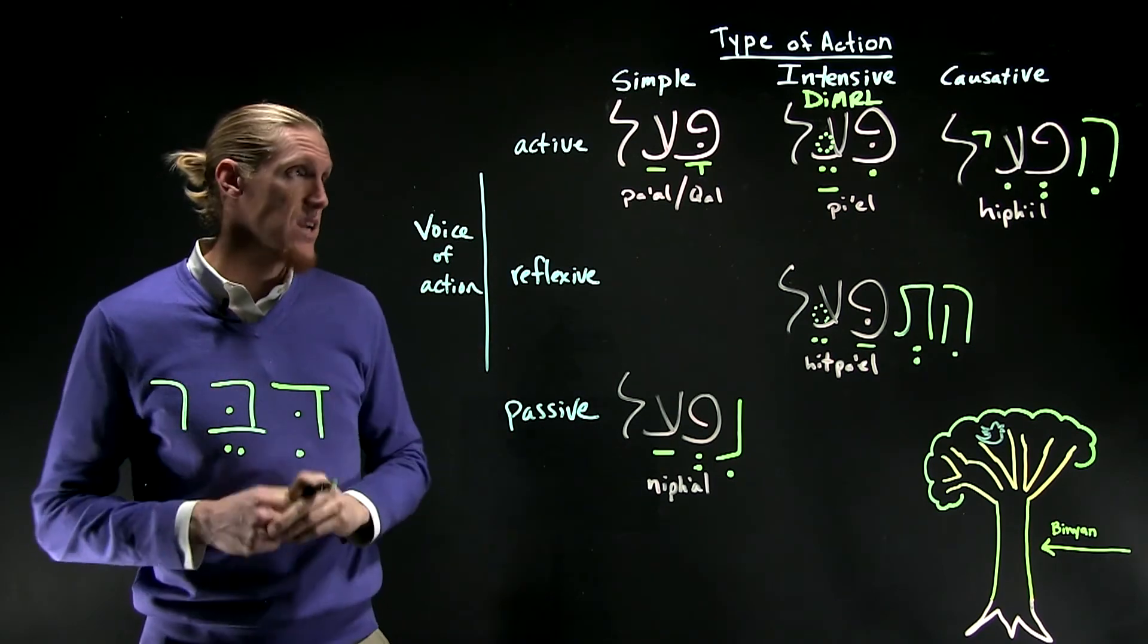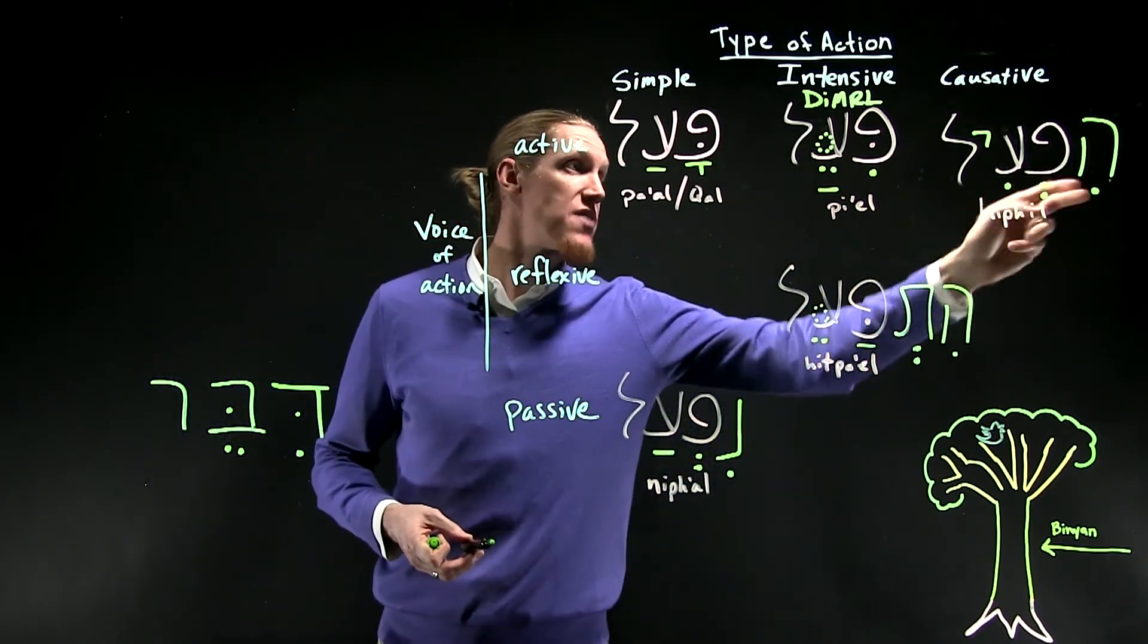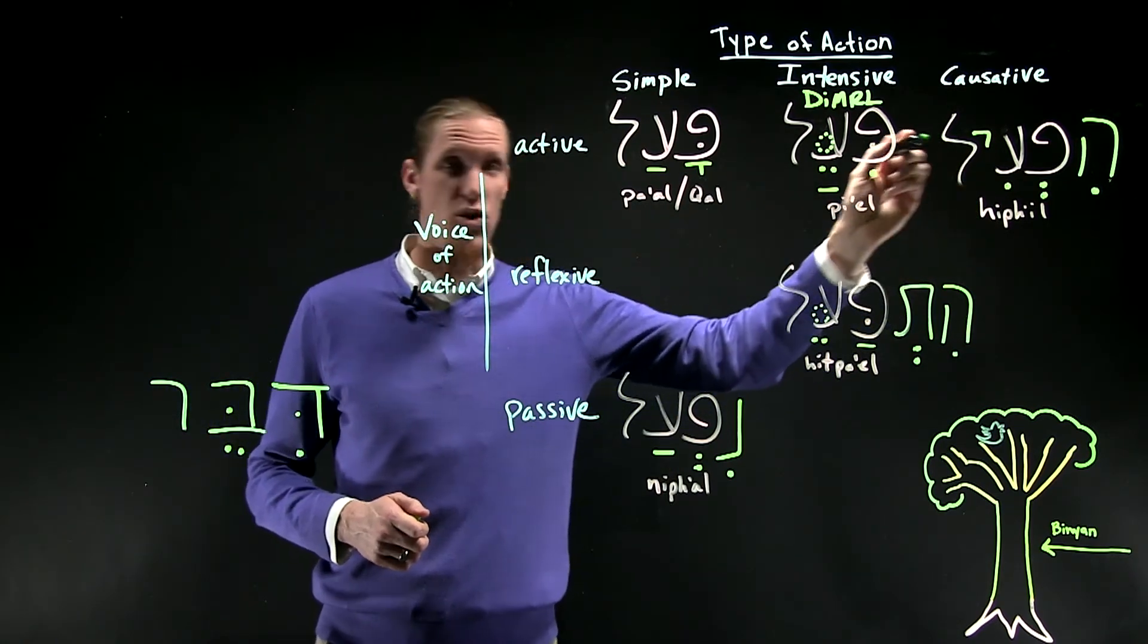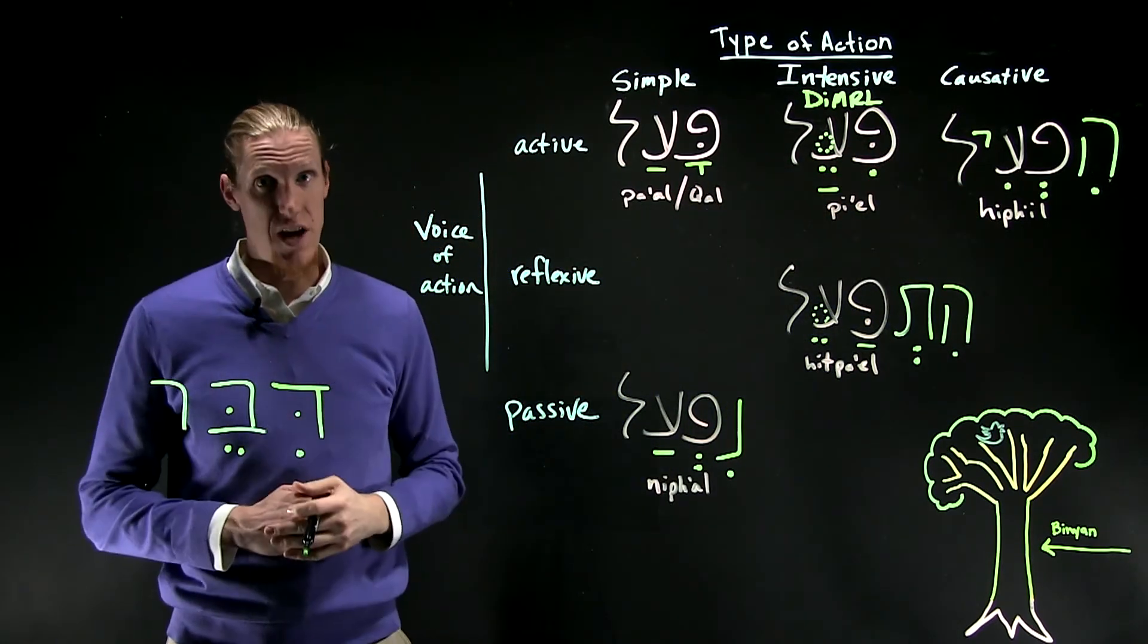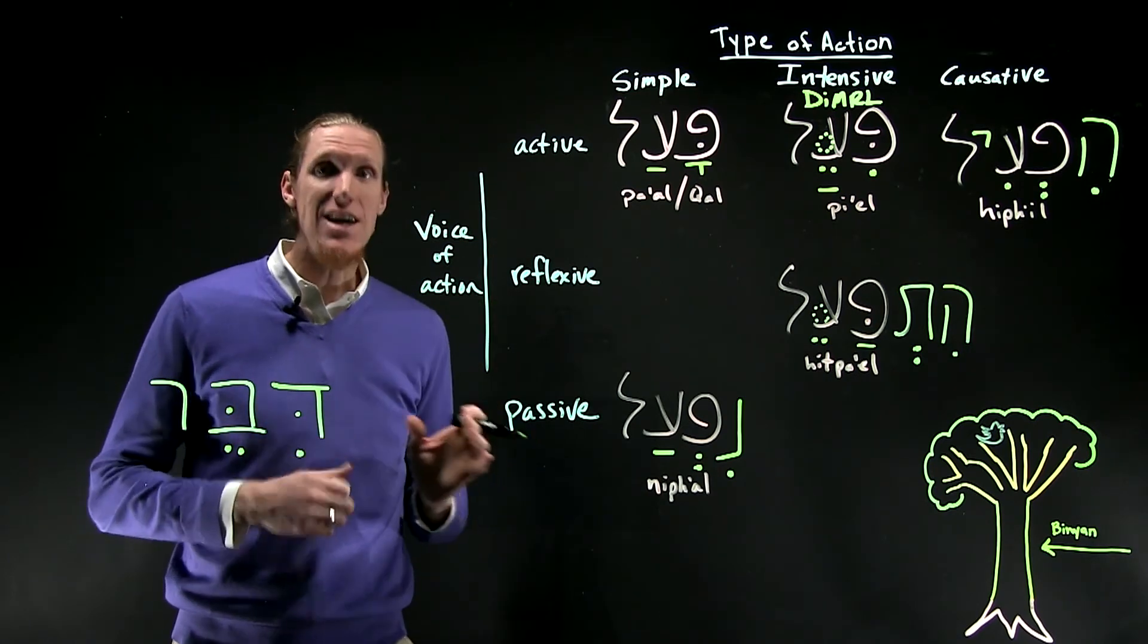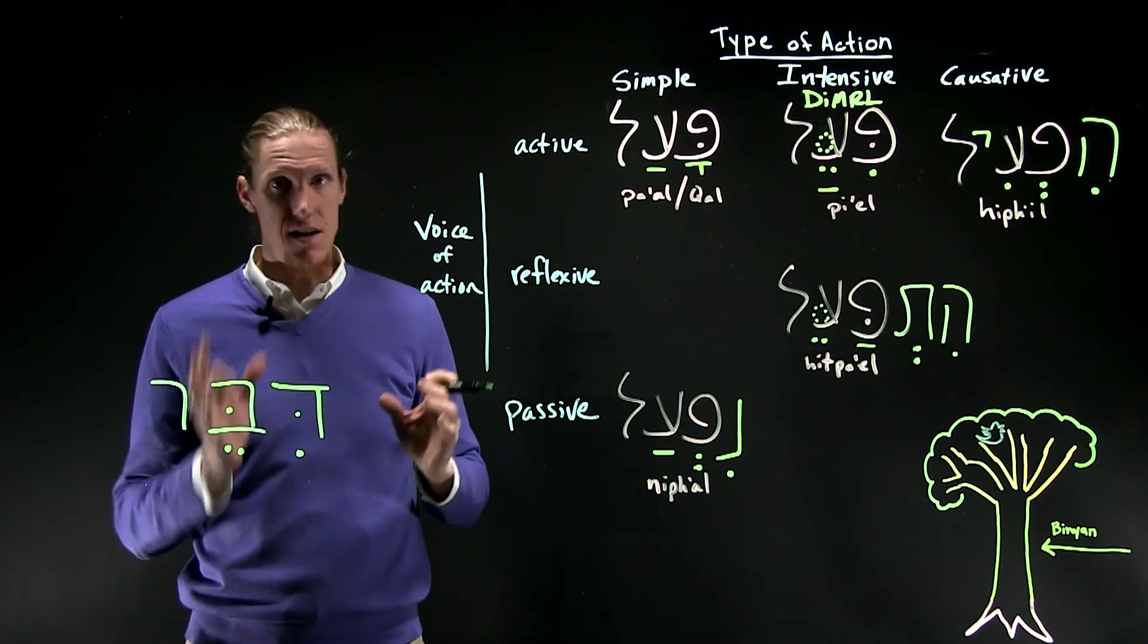The visual sign of the hif'il is a he followed by a hirik and a hirik-yod between the second and third root letters. The vocal sign of the hif'il is he-ee. He-ee.